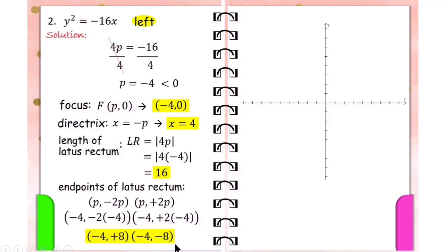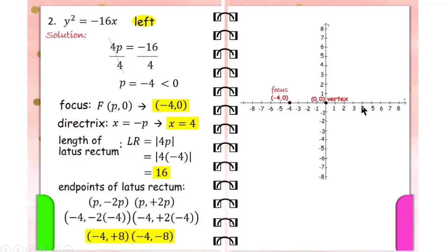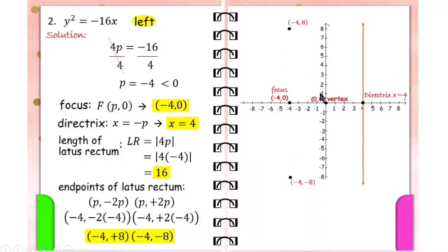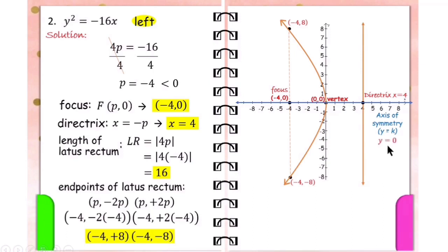To sketch the graph, first plot the vertex at the origin (0, 0). Then plot the focus at (−4, 0). Next, draw the directrix at x equals 4 — a vertical line since it opens left. Then plot the endpoints (−4, 8) and (−4, −8). Connect these points and we now have the graph of y squared equals negative 16x. The latus rectum has a length of 16, and the axis of symmetry is y equals 0.